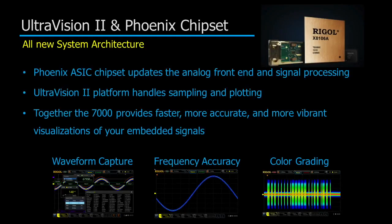UltraVision 2 and our new Phoenix chipset make an all-new system architecture for the 7000 series oscilloscope that provides advances in a number of important characteristics for the scope.